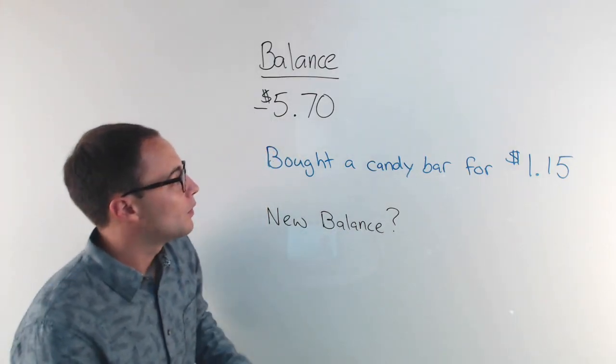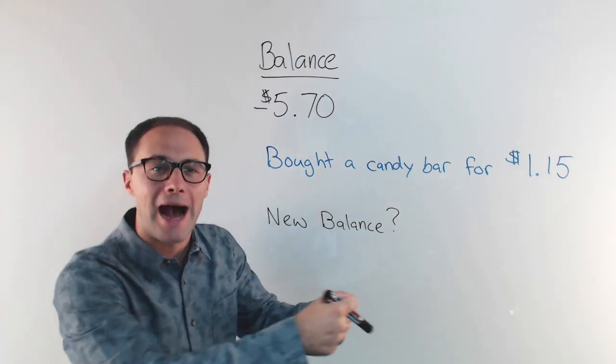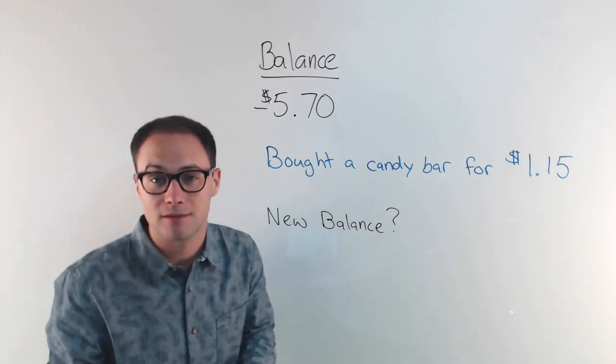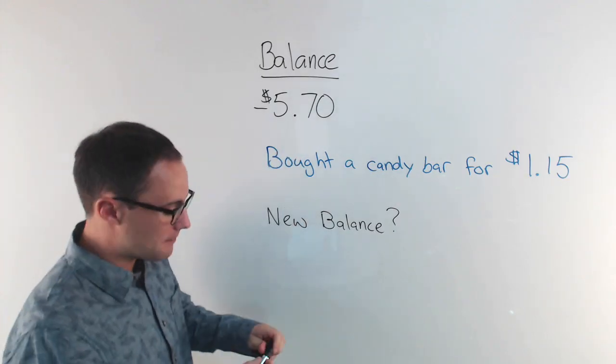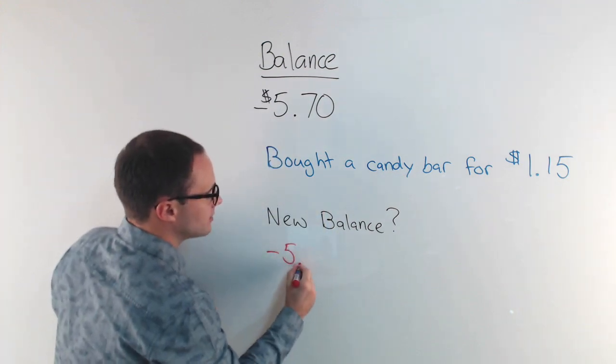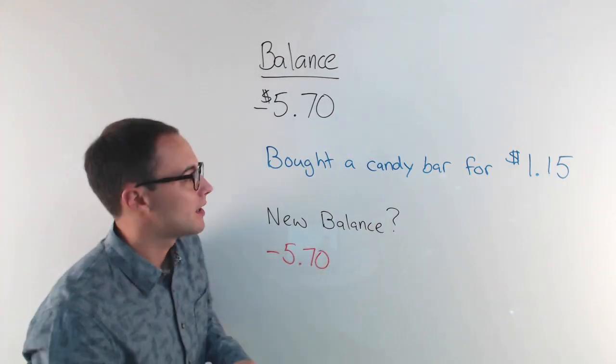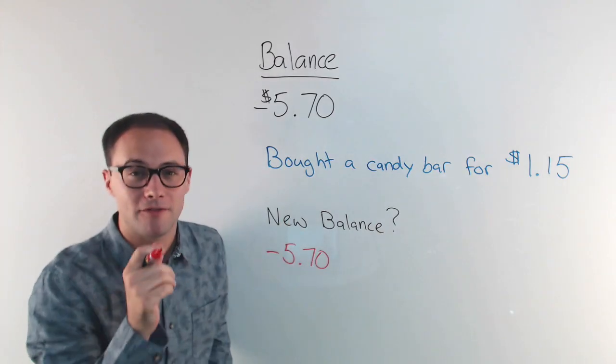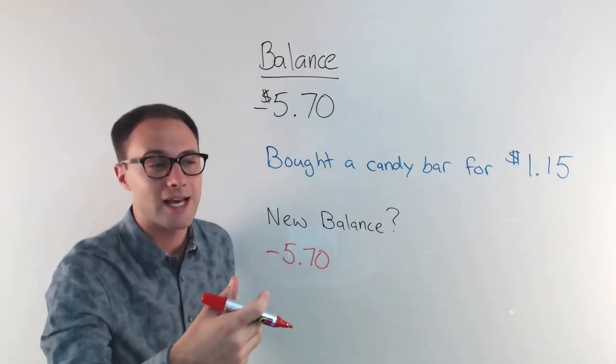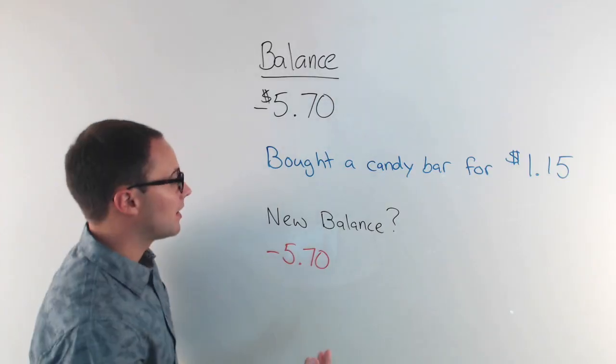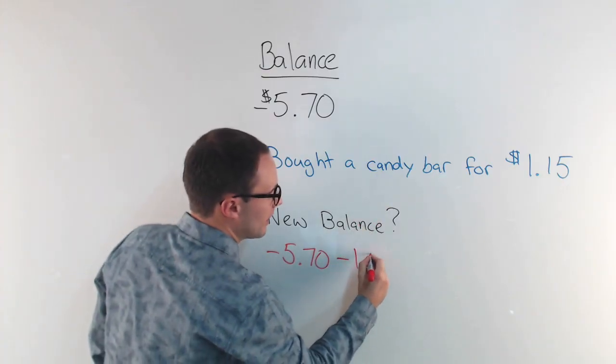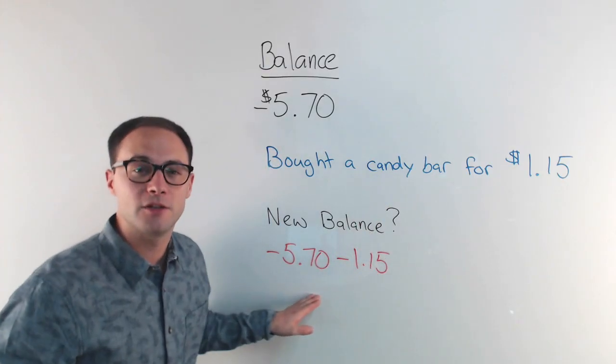Well, when we buy something, we're actually taking money out of our bank account. We're withdrawing money. So that's like subtracting. So the problem we're going to set up is I'm starting with negative $5.70 in my bank account. I bought a candy bar for $1.15, which means my bank account is not going to increase. It's actually going to get more negative. I'm going to owe more money. So I'm going to subtract $1.15. So that's essentially what's happening.